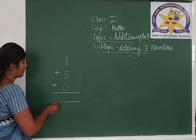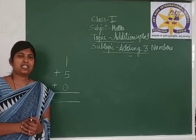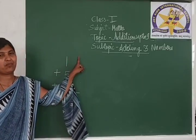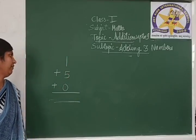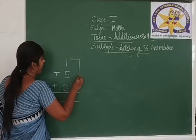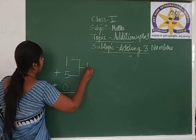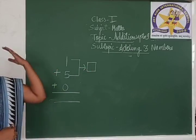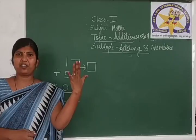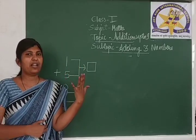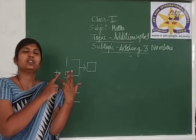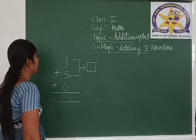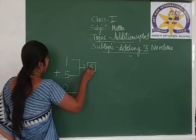We have 3 numbers to add. What will we do first? Add the first 2 numbers, that are 1 and 5. Add these 2 numbers first. We will write the answer in this box. So, 1 plus 5: 1 in your mind, 5 on your finger. Count forward from 1: 2, 3, 4, 5 and 6. Write 6 here.